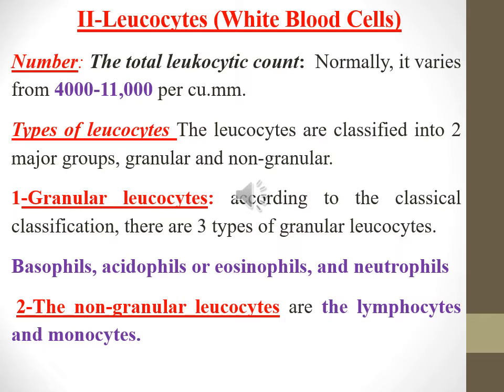The granular leukocytes, according to the classical classification, include three types: basophils, acidophils or eosinophils, and neutrophils. The non-granular leukocytes are the lymphocytes and monocytes.